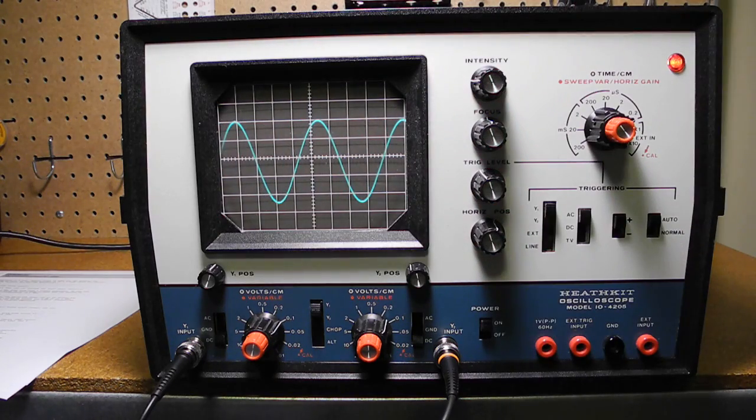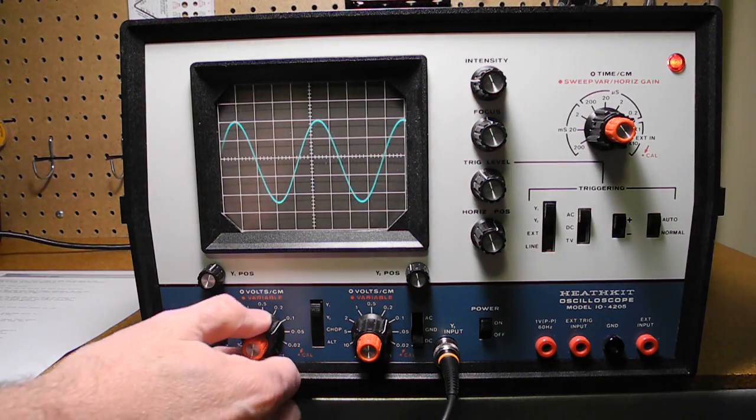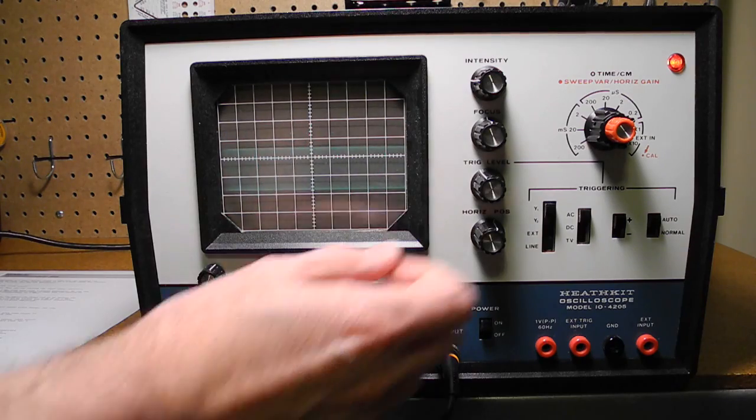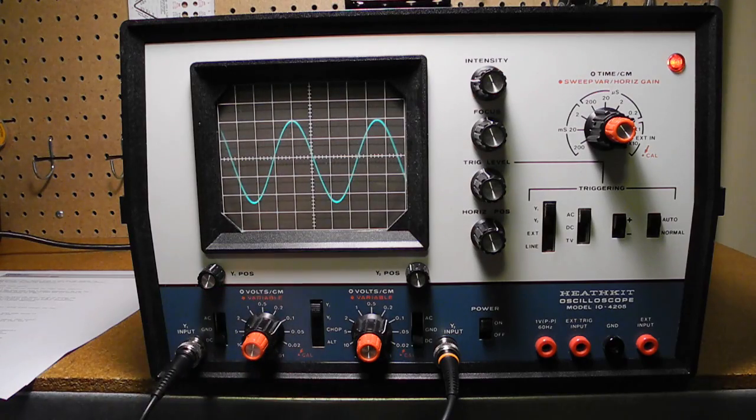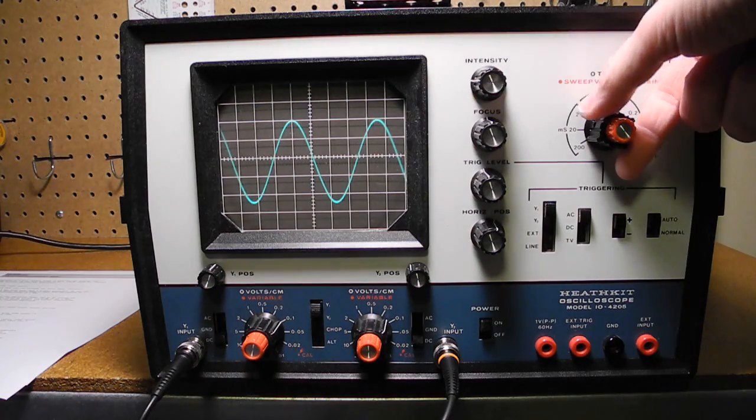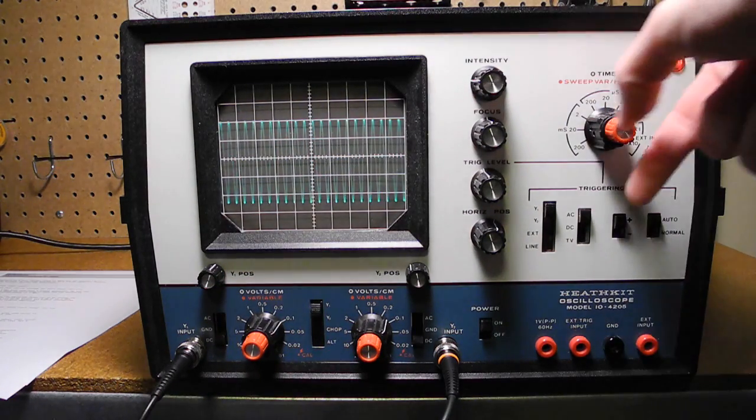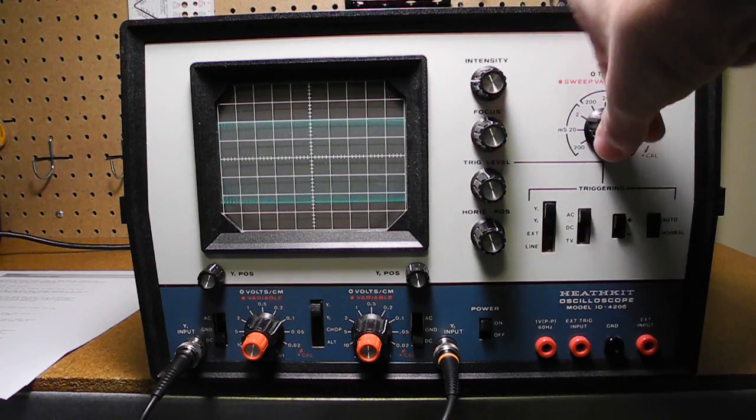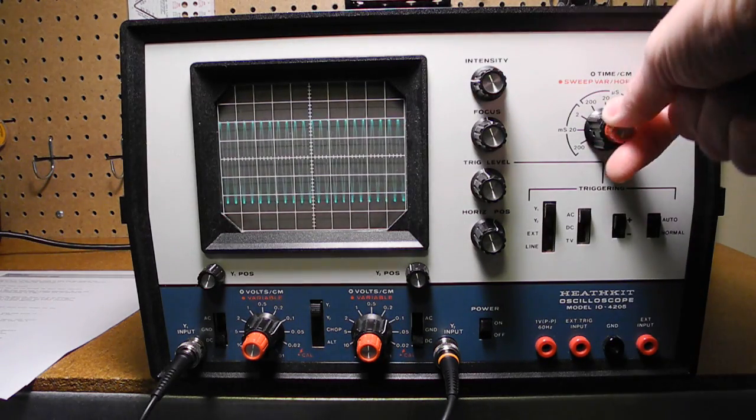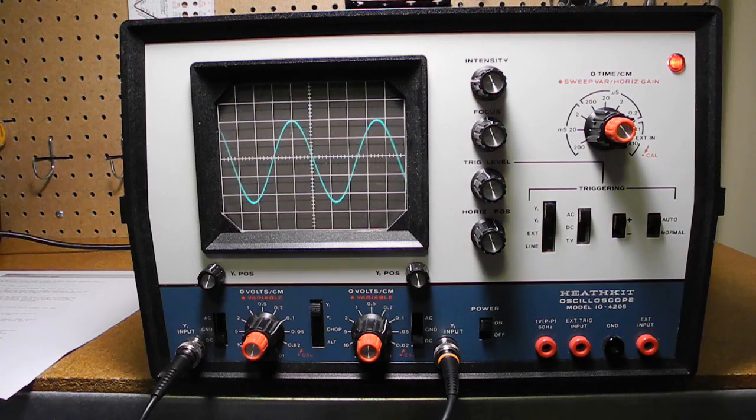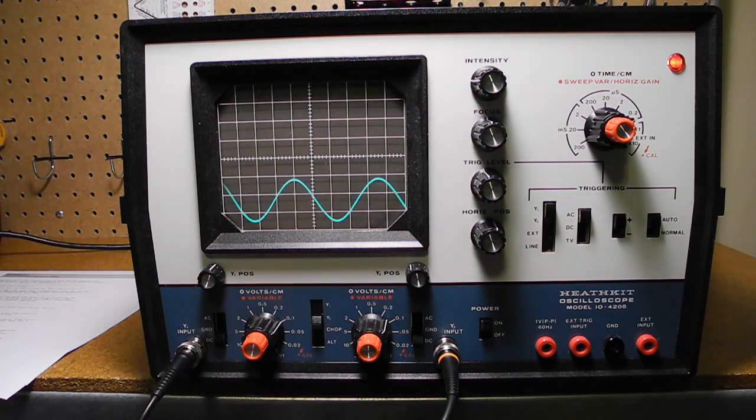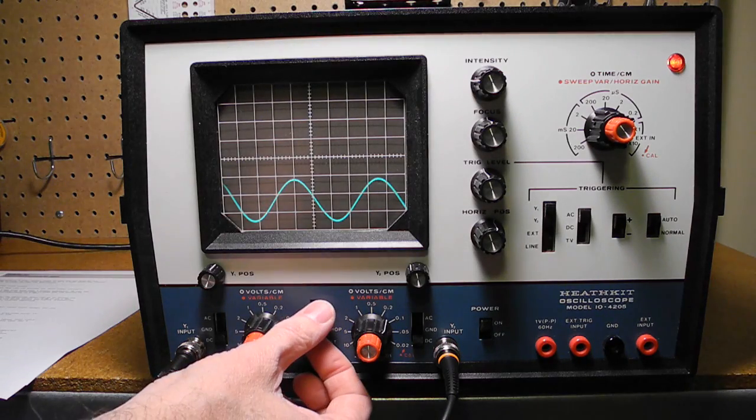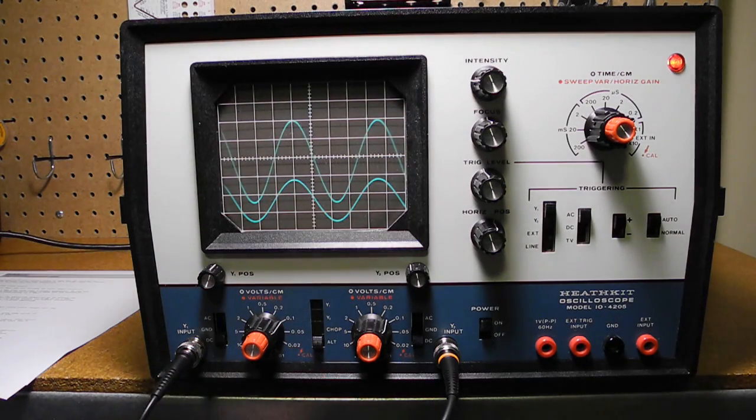Now I'm looking here at channel 1. We can adjust the volts per centimeter if desired. We can also change the sweep rate to something lower and adjust it here if we take it out of the calibrated position. I can also switch to channel 2, which is also showing the same input, or we can switch to the alternate mode where it alternates and we can see both traces.